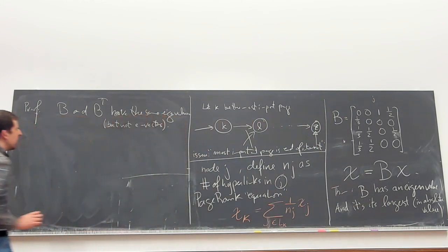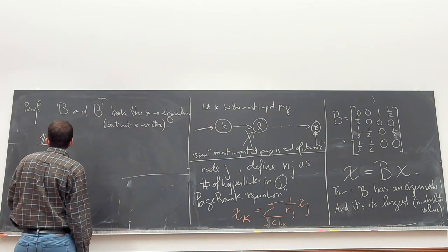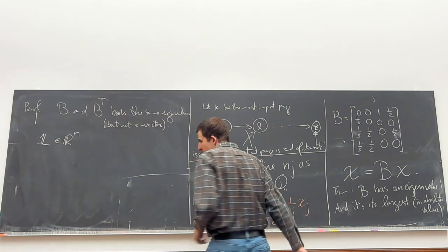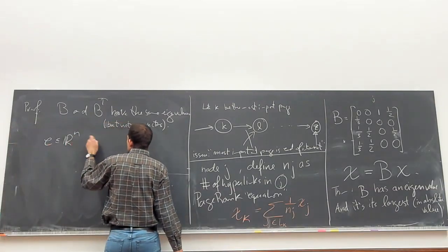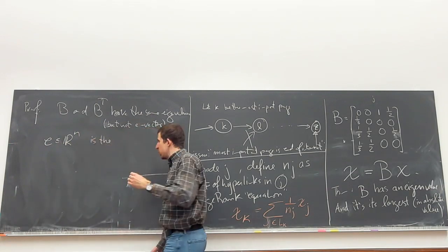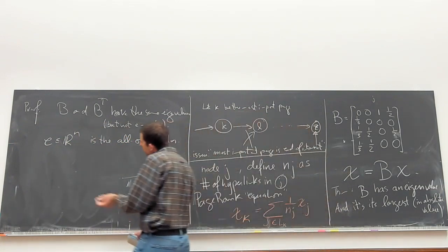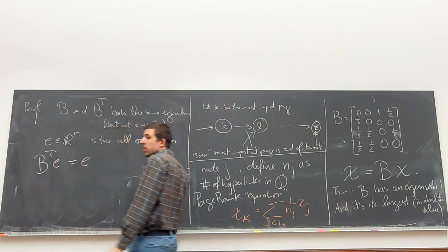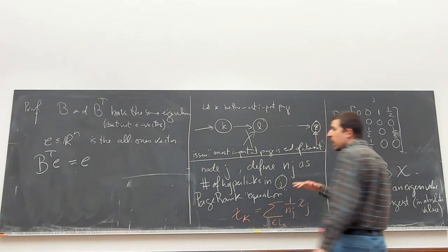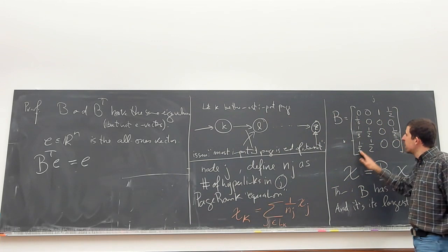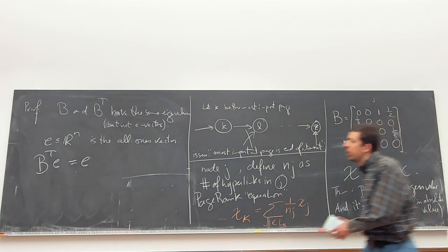Why does B have an eigenvalue of one? B and B-transpose have the same eigenvalues — you can see this via the characteristic polynomial — but not necessarily the same eigenvectors. We're going to show that one is an eigenvalue of B-transpose by exhibiting an eigenvector. Let e be the all-ones vector in R^n. I claim that B-transpose times e equals e. Why? B-transpose times the all-ones vector is just summing the rows of B-transpose, which is the same as summing the columns of B. And by definition, the columns of B all sum to one — because you have n_j terms each equal to 1/n_j. So one is an eigenvalue of B-transpose, and therefore of B.